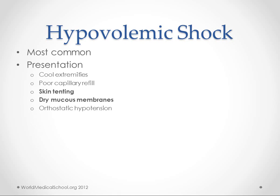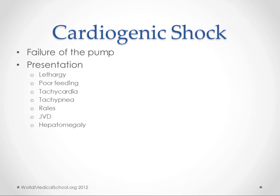Hypovolemic shock is the most common type seen in infants. Presentation across all forms usually includes cool extremities, poor capillary refill, skin tinting, and dry mucous membranes — the latter more associated with hypovolemic shock. Cardiogenic shock presents with lethargy, poor feeding, tachycardia, tachypnea, rales, JVD, and hepatomegaly.